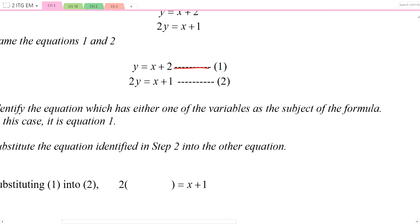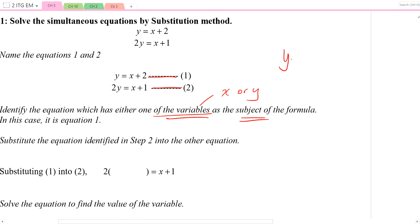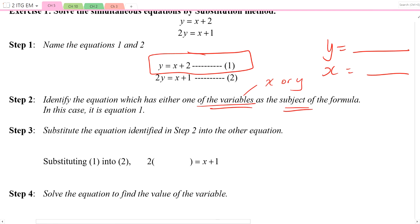In this case, we call this equation 1 and this equation 2 for convenience. The next step is to identify which equation has one of the variables as the subject of the formula, the variables referring to x or y. We are looking for an equation that says y equals something or x equals something. In this case, equation number 1 is of such format: y equals x plus 2.